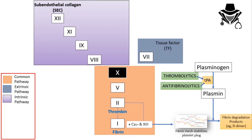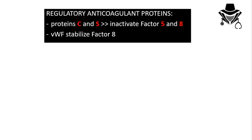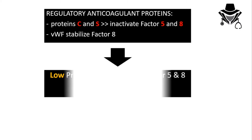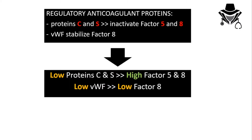To add clinical value, let's talk about other regulators. We have regulatory anticoagulant proteins C and S, produced by the liver — they inactivate factors 5 and 8. We also have von Willebrand factor, which carries and stabilizes factor 8. So if a disease lowers protein C or S, factors 5 and 8 increase, resulting in more thrombus formation. Low von Willebrand factor leads to low factor 8 and increases bleeding risk.